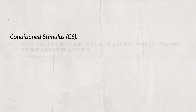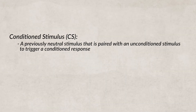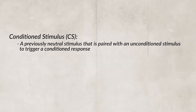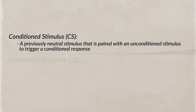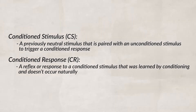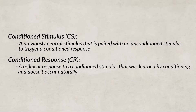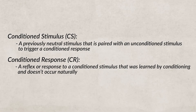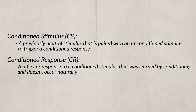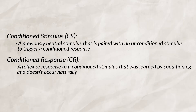A conditioned stimulus is when a stimulus that is neutral is paired with an unconditioned stimulus to trigger a conditioned response. A conditioned response is when a previously neutral or unconditioned response is occurring due to a conditioned stimulus. Essentially, there has been a learned response to a previously neutral stimulus.